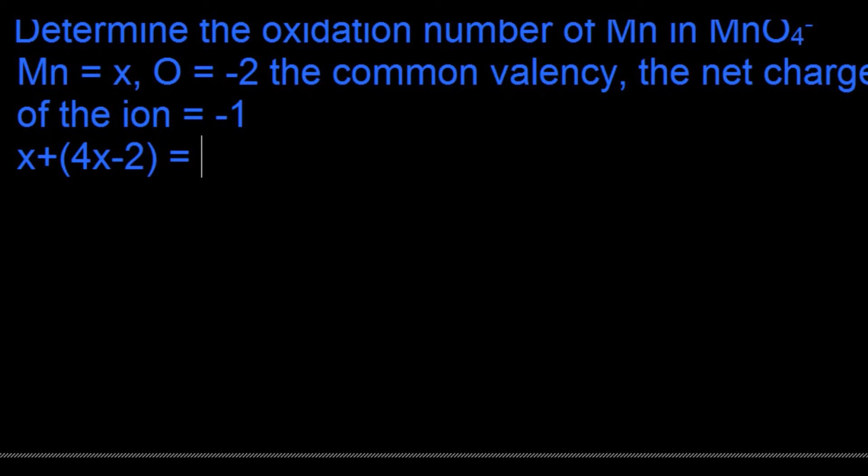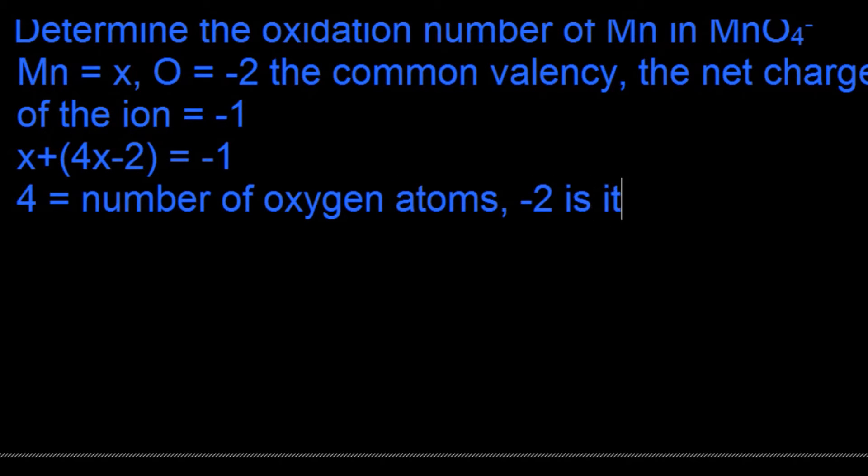From this value, we can obtain the oxidation number of manganese which turns out to be +7. Here, 4 represents the 4 oxygen atoms and -2 represents the oxidation number of oxygen.